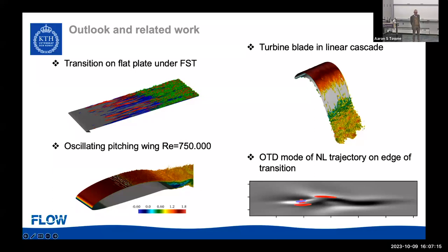Regarding linearizing around the full nonlinear solution: what was actually only useful is before the flow became turbulent. That's why we concentrated the OTD modes on the region before it became turbulent. You could follow further, but the modes become totally meaningless when you try to do a linear eigenmode around turbulent flow.